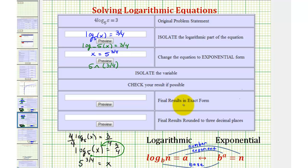Next, it asks for the final results in exact form. Well, the exact solution is x equals five to the power of three-fourths.